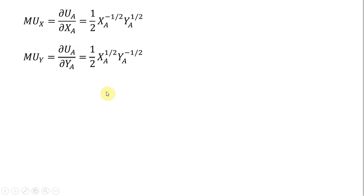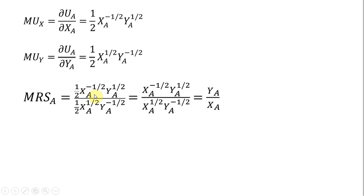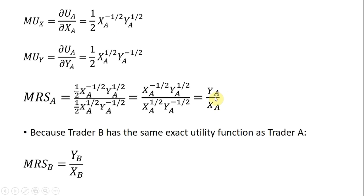So again, our marginal utilities are for good X and good Y, and now we're just going to divide one by the other. Here's the marginal rate of substitution for trader A: in the numerator we have the marginal utility of good X, in the denominator we have the marginal utility of good Y. We notice that the one-halfs cancel. Then following the rules of exponents, X to the minus one-half in the denominator gives us X, and Y to the minus one-half in the denominator brought into the numerator leaves us with Y. Because trader B has the same exact utility function as trader A, the marginal rate of substitution for trader B is just a similar expression — just change the subscripts.